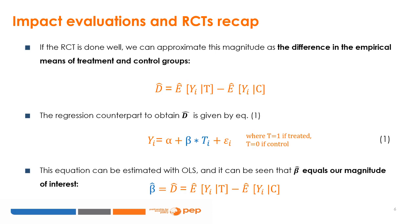The regression counterpart to obtain D-hat is given by equation 1, where T is a dummy variable that equals 1 if the unit has been treated. This equation can be estimated with OLS, and it can be seen that beta-hat equals our magnitude of interest — the difference between the empirical means of the outcome in the treatment and control groups.